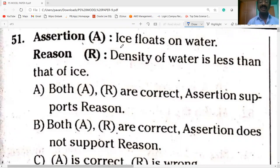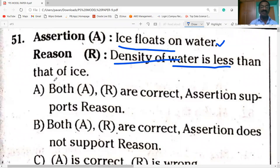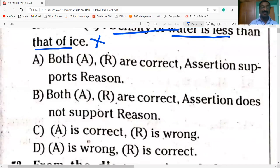Today's first question on the screen. Ice floats on water. You know that ice floats on water, it is a correct statement. Assertion is true. Density of water is less than that of ice. You know that density of water is more than that of density of ice. So option A is correct. Reason R is wrong. So option C is correct.